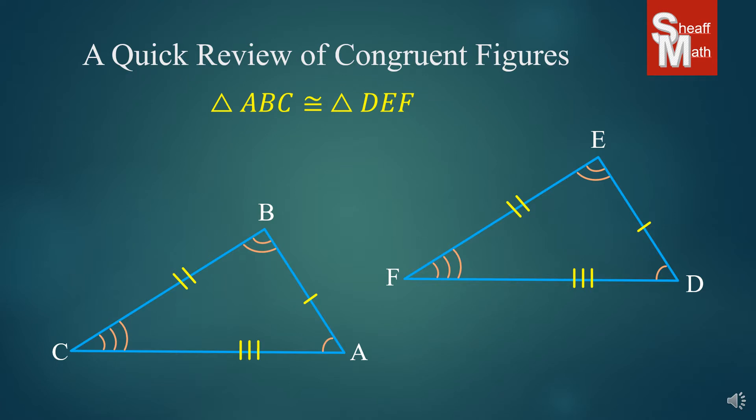And so, this is how we state that two triangles are congruent. We choose three points on the first triangle, and then we choose the corresponding points on the other one. And so, A matches D, B matches E, and C matches F. Very important to know.